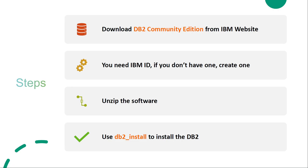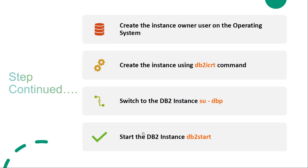Once the software is downloaded, transfer it to the target machine — in my case Red Hat Enterprise Linux 9.1 — then unzip the software. Once unzipped, you will find a utility called db2_install. Use this utility to install DB2. Once DB2 is installed, the next step is to create the instance. To create a DB2 instance you need an instance owner user ID on the operating system.